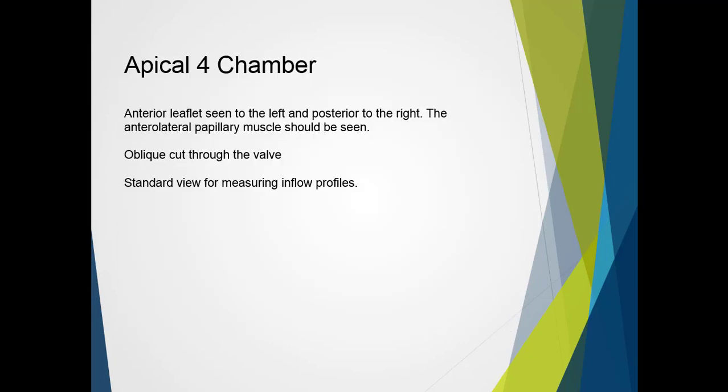The apical four-chamber view shows the anterior leaflet to the left and the posterior leaflet to the right of the image. The anterolateral papillary muscle should be seen as this view attains the anterolateral LV wall. This view is an oblique cut through the valve and does not run along the leaflet commissure. It is important to note that this view is standard for measuring inflow profiles — pulse wave for diastolic function and stroke volume assessments, and continuous wave for forward flow intensity and stenosis evaluations.